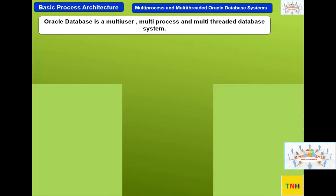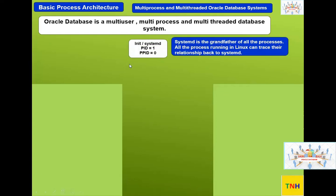From 12c, Oracle introduced the multi-threaded database system feature. To enable it, you use a parameter — it is supported on Linux, Unix, and Solaris, but not on Windows. To understand what the threading mechanism means in relation to the Oracle database and operating system, we need some background information on the OS.